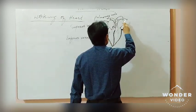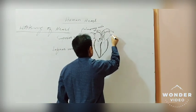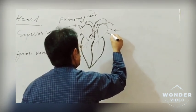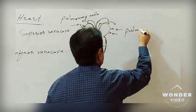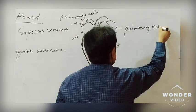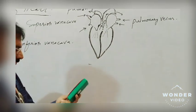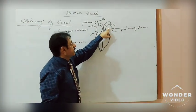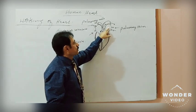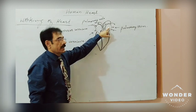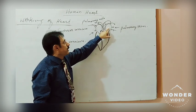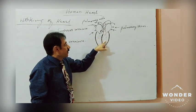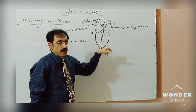That oxygenated blood from the lungs is returned back to the heart through two veins called the pulmonary veins. The pure oxygenated blood from the lungs enters the left atrium of the heart through these two pulmonary veins. When the left atrium contracts, the pure blood is forced into the left ventricle through the bicuspid valve.